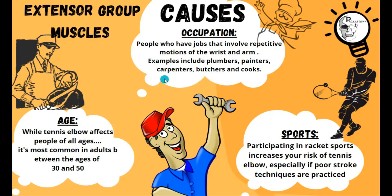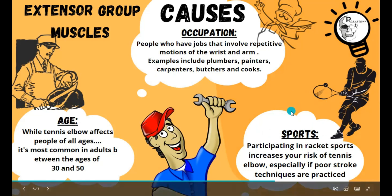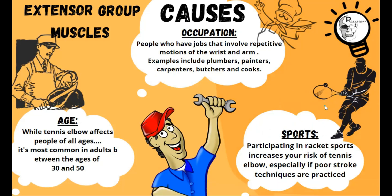The second category is sports. People who participate in racket sports have an increased risk of tennis elbow, especially if proper stroke techniques are not practiced. During the backhand strike, severe strain can come upon the extensor compartment muscles. That is how it got the name 'tennis elbow' — because in tennis, immense pressure comes over the extensor compartment muscles of the forearm, causing this condition also called lateral epicondylitis.